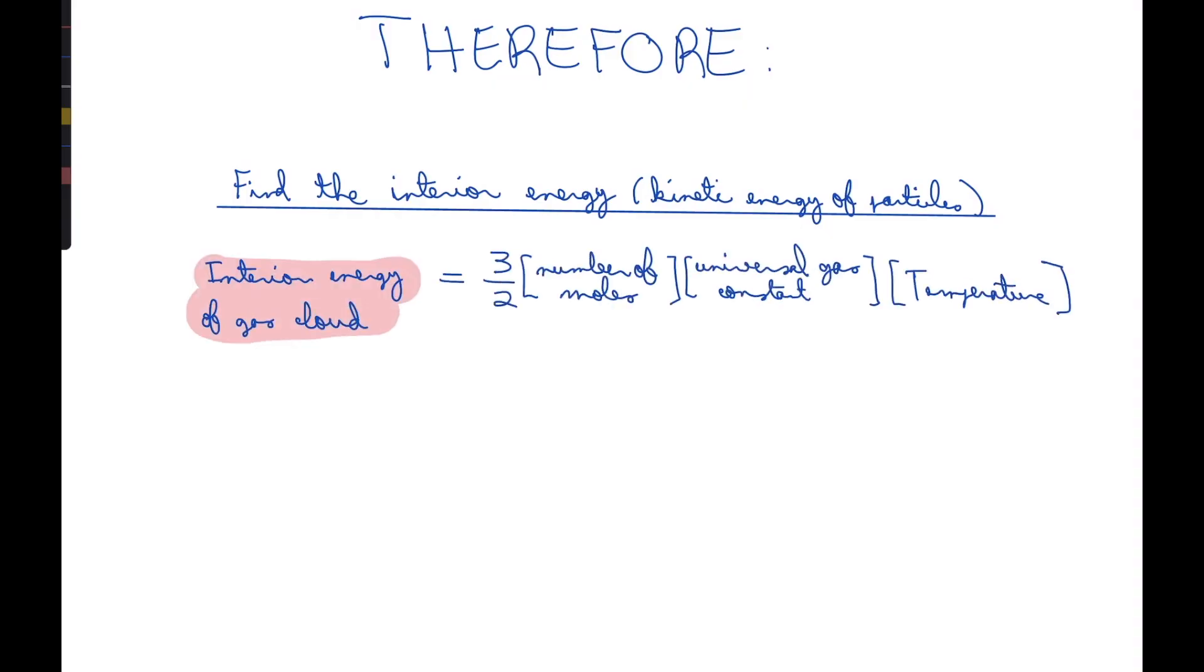With this, we can calculate the system's kinetic energy and the average velocity of its particles, because velocity is proportional to temperature. Given the gravitational equilibrium equation and the velocity, we can find the cluster's mass.